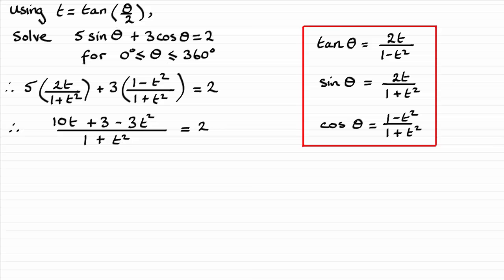Okay, next I'm going to multiply both sides by 1 plus t squared. So that's going to give me this result. Remember 2 times the 1 plus t squared is going to give me the 2 plus 2t squared. So I just need to rearrange this, make it equal to zero. So I'm going to get rid of these terms on the left hand side by adding 3t squared, subtracting 3, and subtracting 10t from both sides.